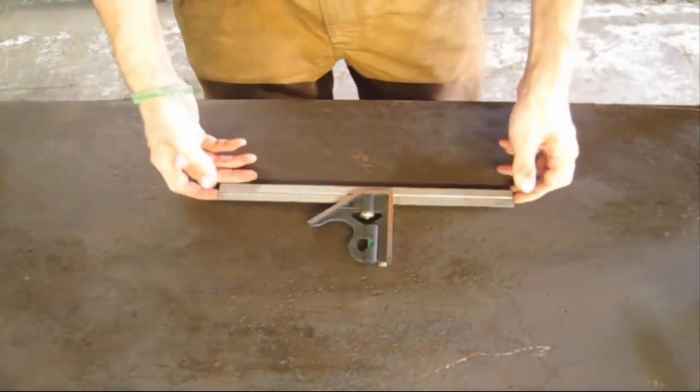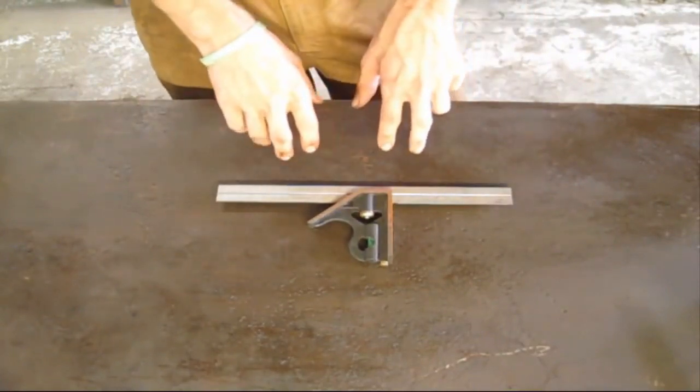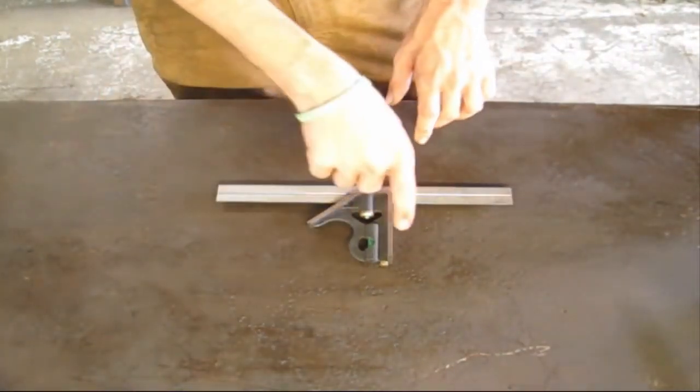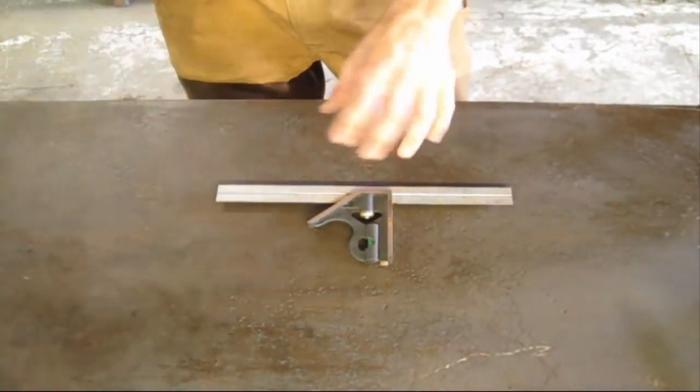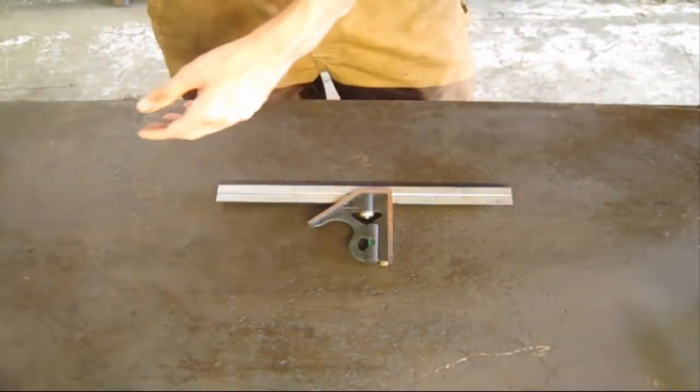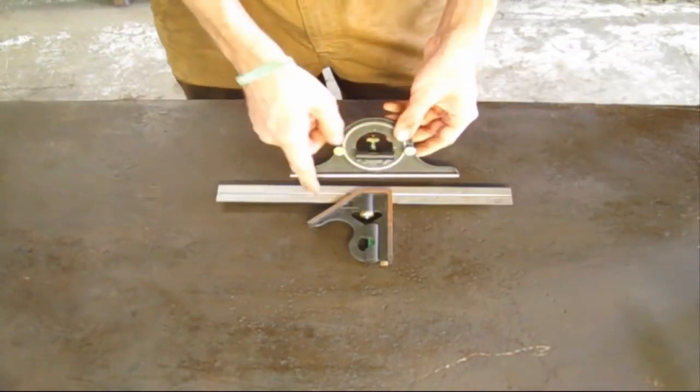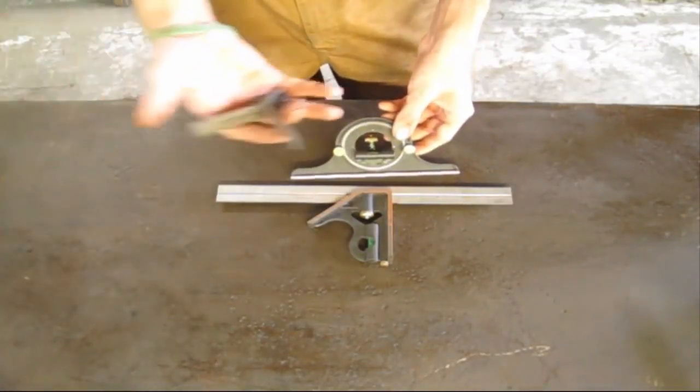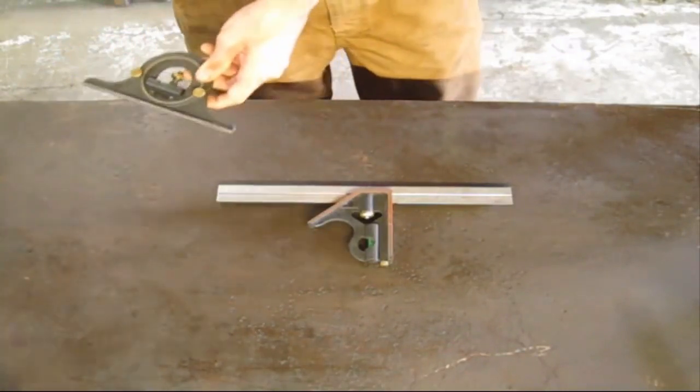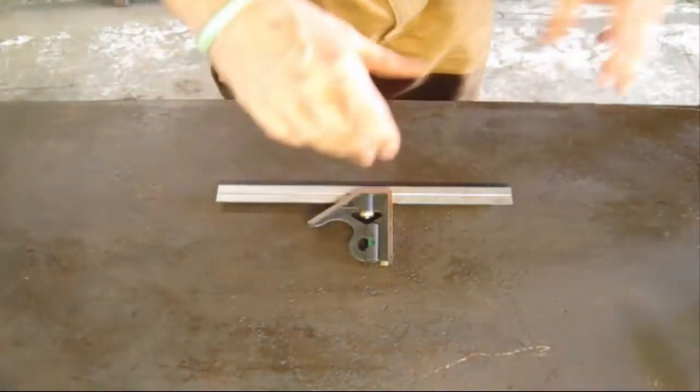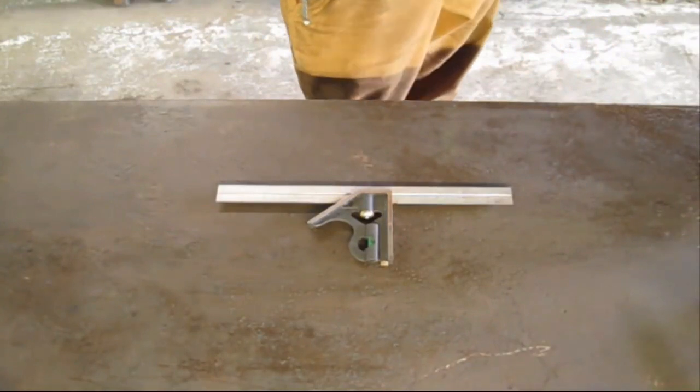Most people think when they look at a combination square that this is the whole tool, that you have a square body and a ruler. That's basically not true. The combination square also comes with a protracting head that attaches to the ruler as well as a center finder, which also attaches to the ruler. So let's give a demonstration so you know what I'm talking about.